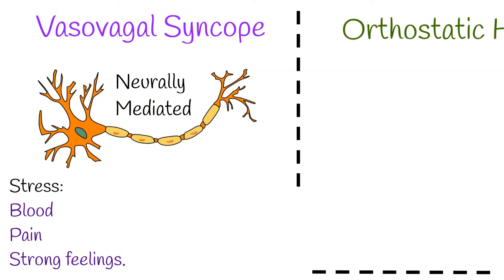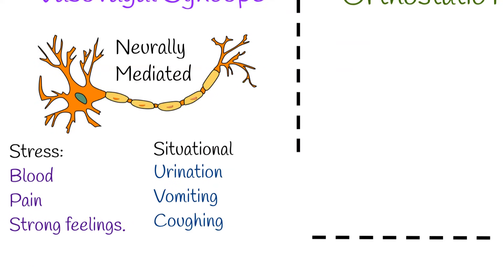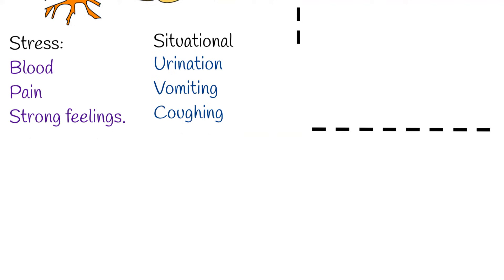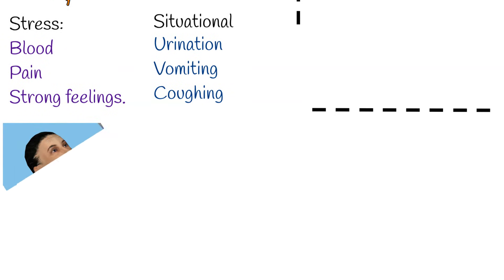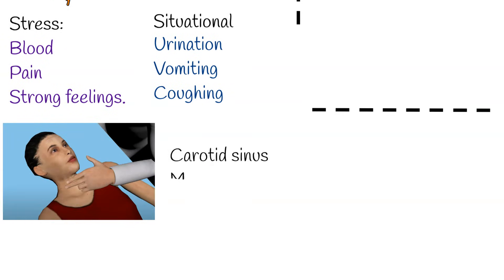Part of neurally mediated syncope is situational syncope, where episodes happen during specific situations such as urination, vomiting, and coughing. Neurally mediated syncope may also occur when an area in the neck known as the carotid sinus is pressed.